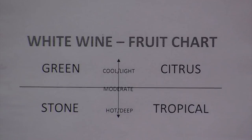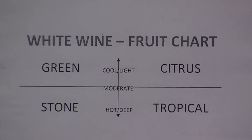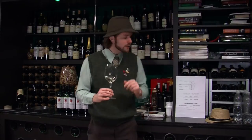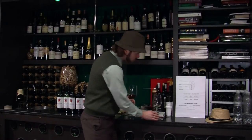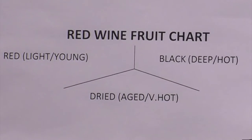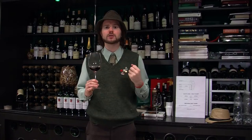But remember, we stick for white wines to the same fruits: green, citrus, stone and also tropical fruits. For red wines we still look at red fruits, black fruits and things like dried fruits as well. But for both categories there may be oak, there may be soil characteristics, earthiness, minerally aged characters, yeast characters, vegetable and lots of other things.